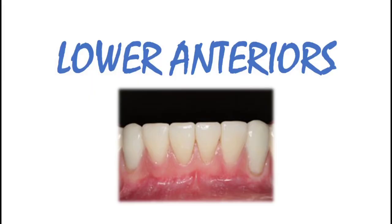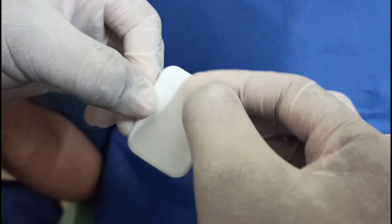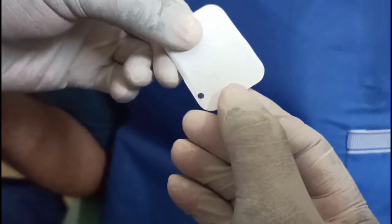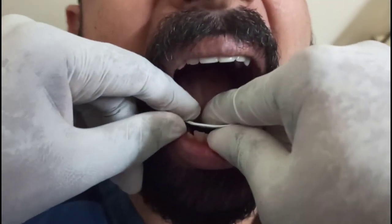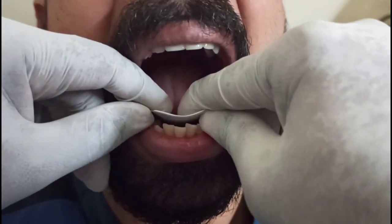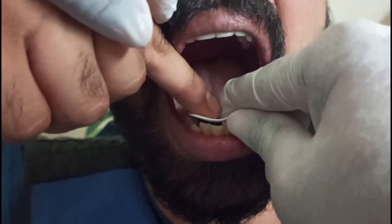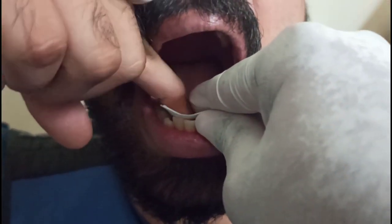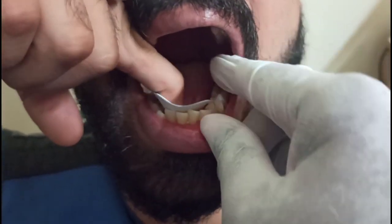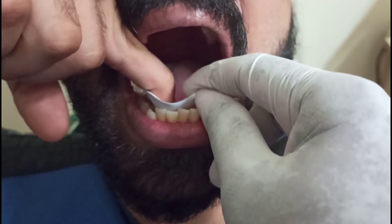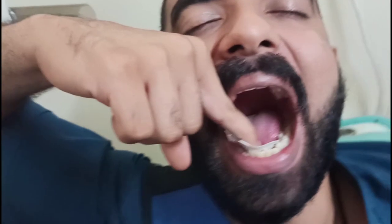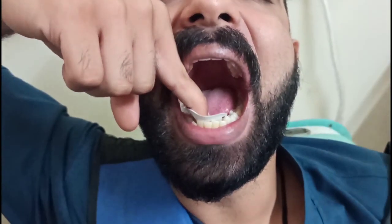Next is for lower anteriors: place the film so that 2 to 3 mm of the film is extending away from the incisal plane. The important thing is the patient has to raise his hand and then hold the film deep inside towards the tooth from the top. By doing this there will be no hindrance by the patient's hands when placing the tube.